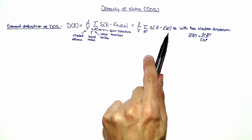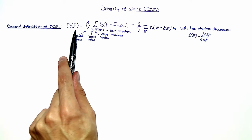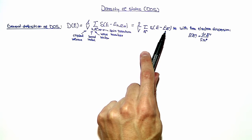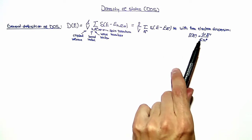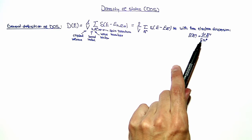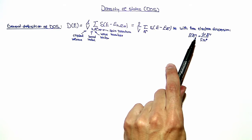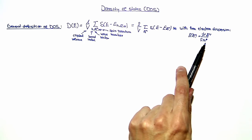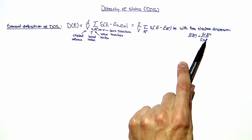You can see that the functional form of the density of states depends on the dispersion relation. For the first part of the exercise, we should use a free electron dispersion, which is given by the equation here. It is proportional to the wave vector squared and depends on the effective electron mass m-star.